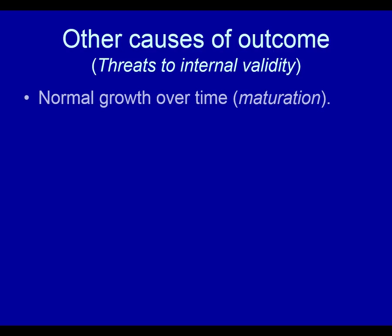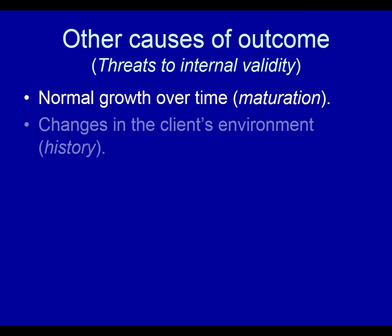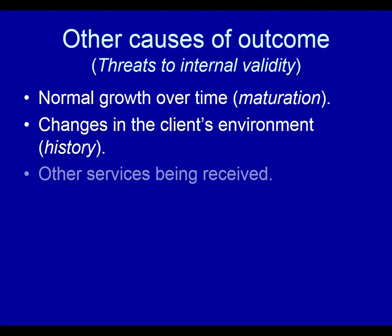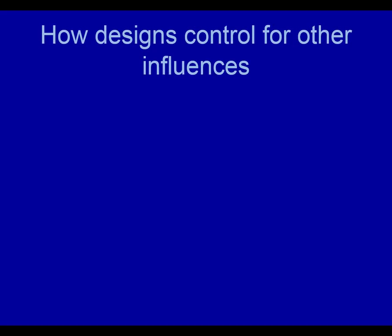Threats to internal validity refer to things other than the treatment that might be causing a client to improve. One is normal growth over time, referred to as maturation. Another is changes in the client's environment, referred to as history. Other services being received might be another influence upon outcome, and there are many others as well.